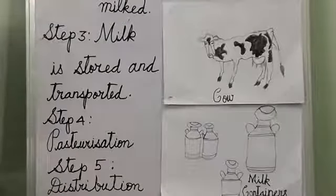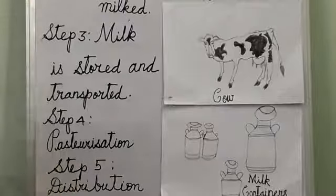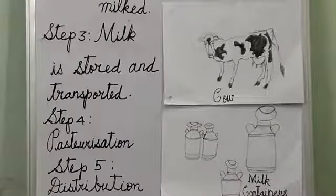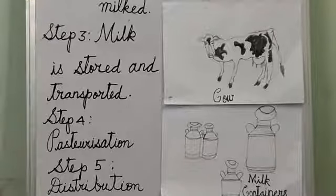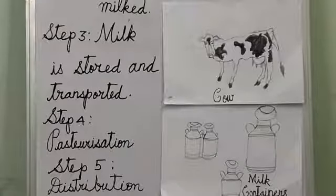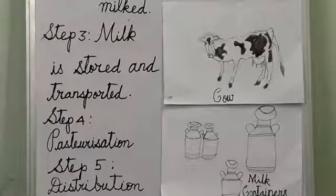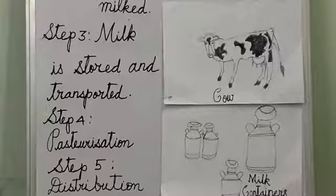Step four is pasteurization. At the processing plant, the raw milk is pasteurized. Raw milk has some bacteria or germs which need to be removed before it is packaged. The process of destroying germs in milk is called pasteurization. After pasteurization, the milk is safe for us to drink.